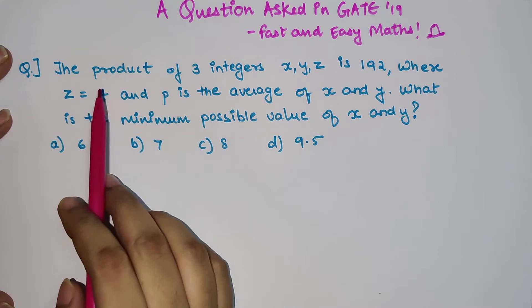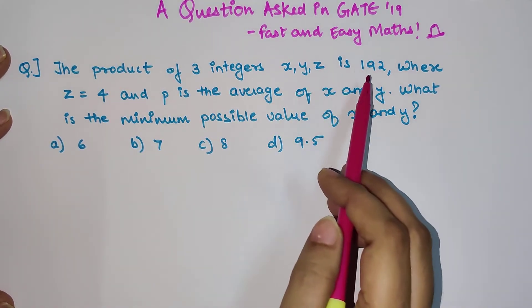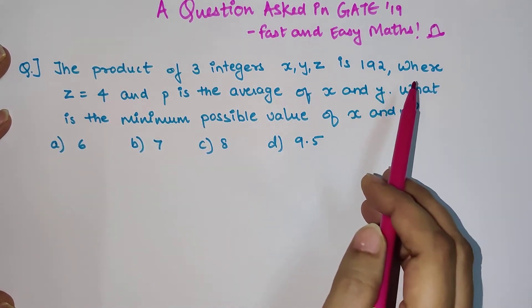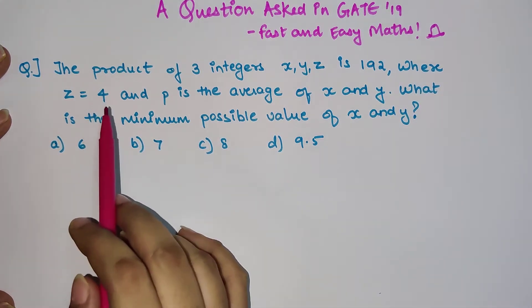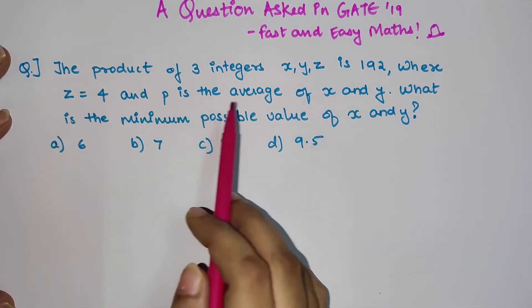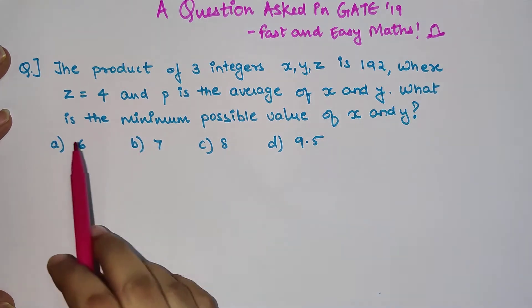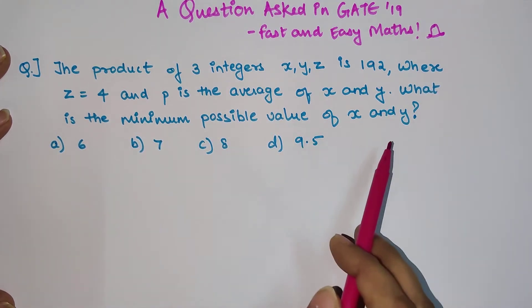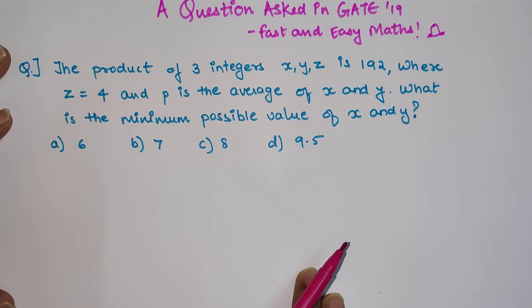The question says: the product of three integers X, Y, and Z is 192, where Z is equal to 4, and P is the average of X and Y. What is the minimum possible value of X and Y?